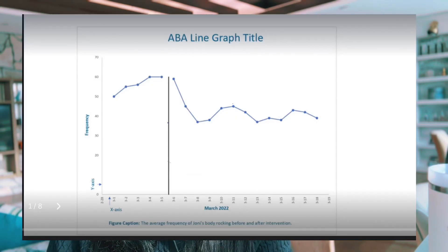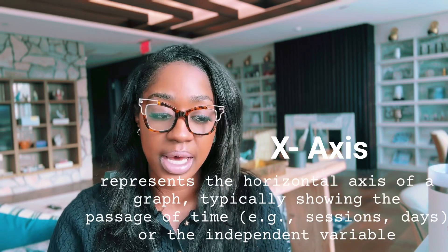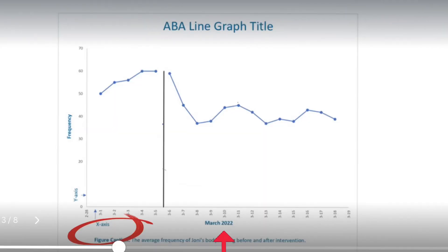First, let's look at a graph. What does an ABA graph look like? It will look something like this. Now there are some major terms or terminology when you are trying to identify different components or elements of a graph. Let's start with the x-axis and the y-axis. The x-axis is the horizontal line and usually it measures some form of time — how many days in a month, how many sessions were conducted, how many months in a year. It measures some form of time, trials, or sessions.